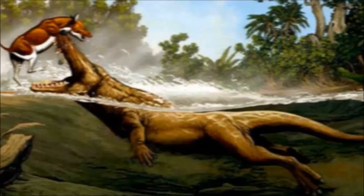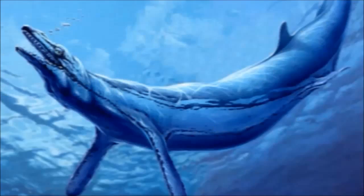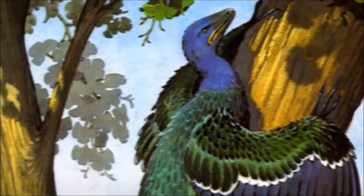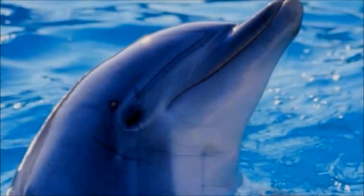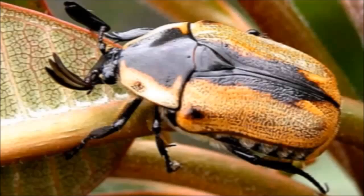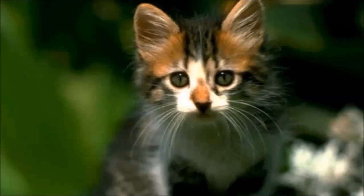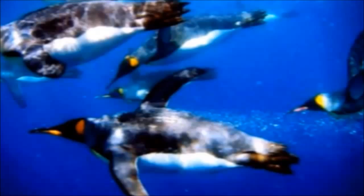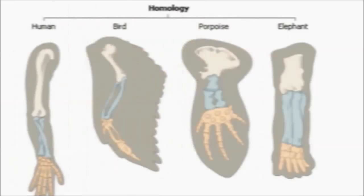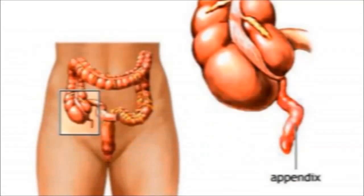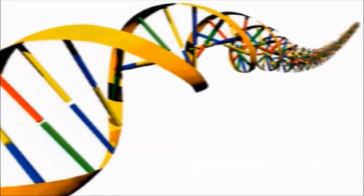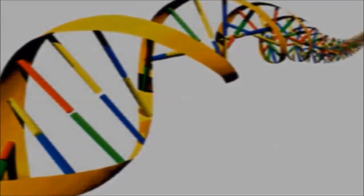Not only do we find multitudes of transitional species all throughout the fossil record, we also find within currently living animals a great variety of evidence displaying ongoing transitional processes. For example, homologous structures, vestigial organs, and even tucked away within the genetic code.